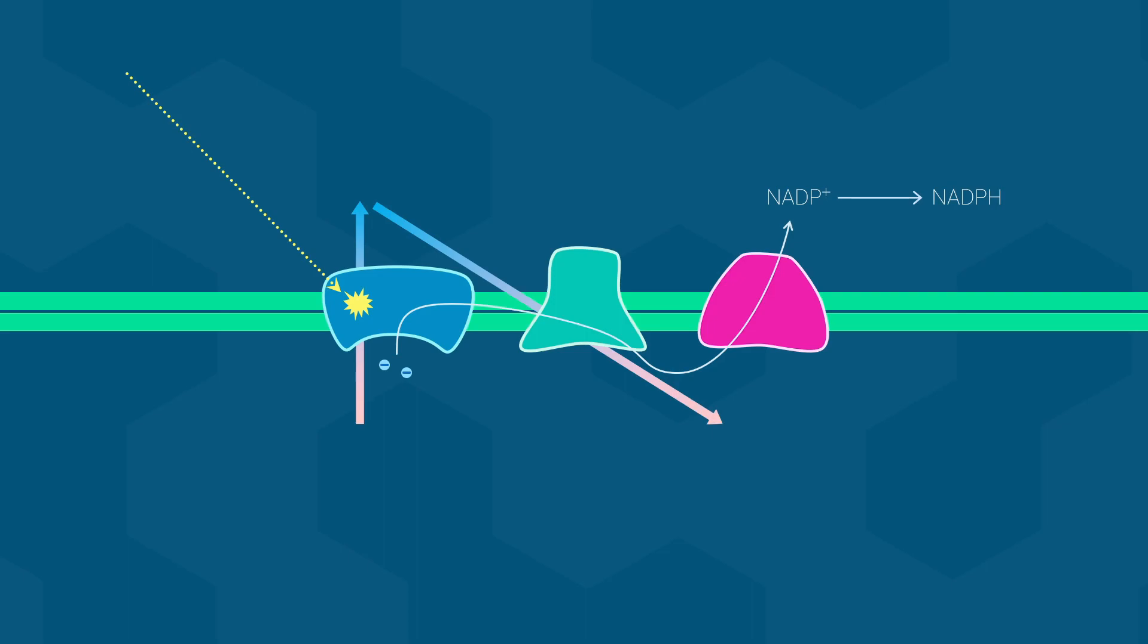This release of energy is used by cytochrome b6f to move protons across the membrane. Once at photosystem I, the electrons again are boosted in potential by more energy from photons. At this point they have enough potential energy to reduce NADP+ and form NADPH.